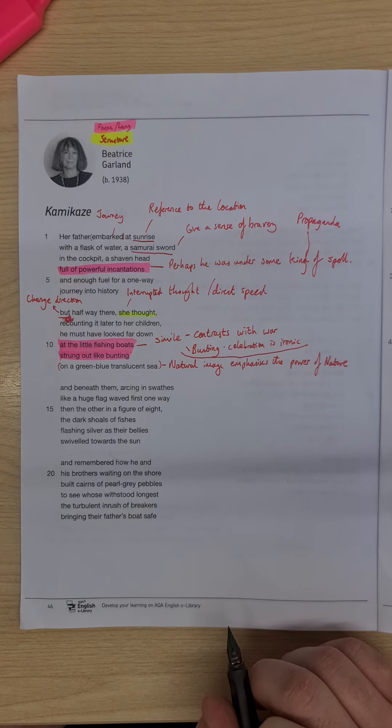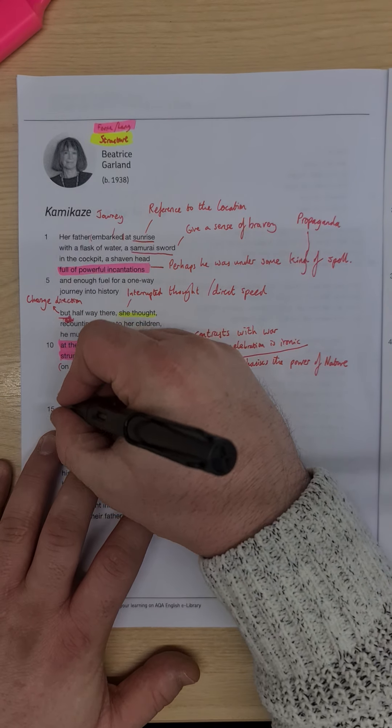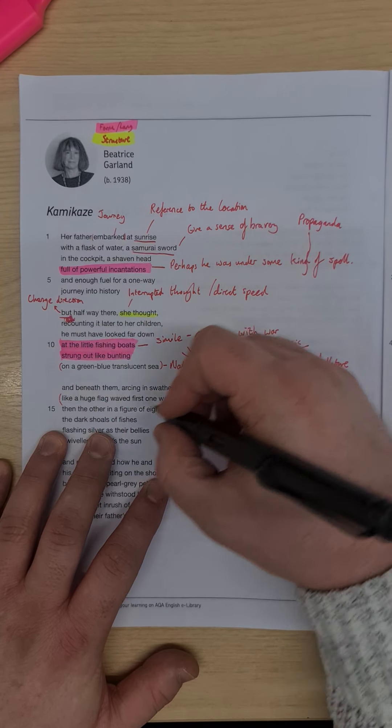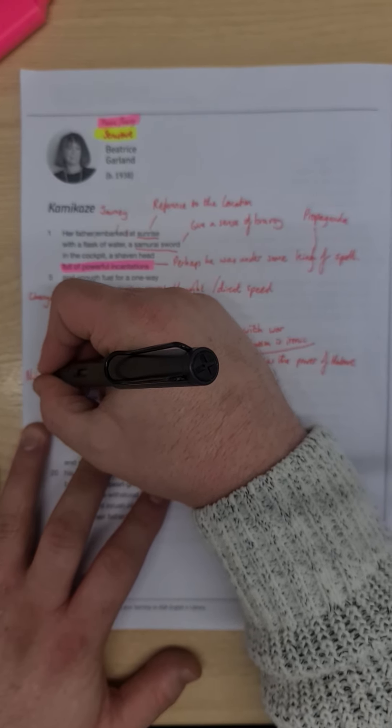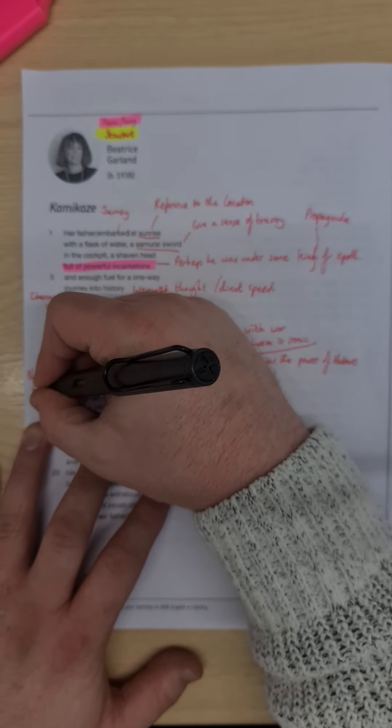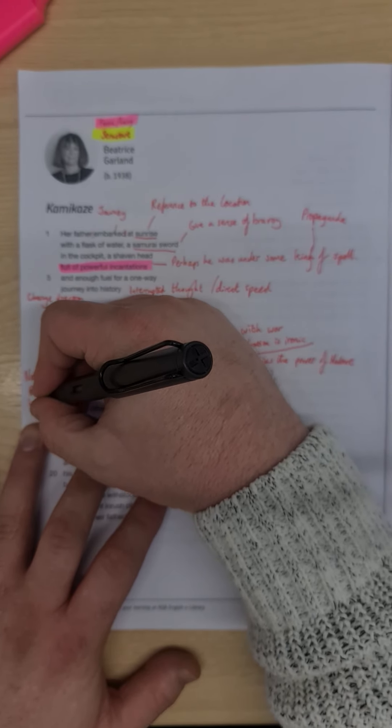And beneath them, arcing in swathes, like a huge flag witted first one way. Well, we've got this idea of a huge flag. Well, that's like national pride or honour.